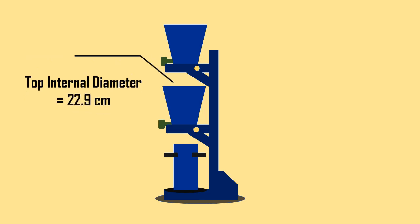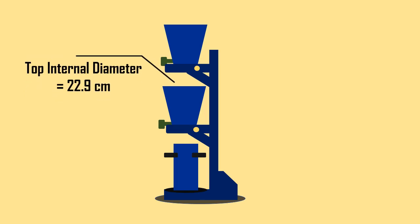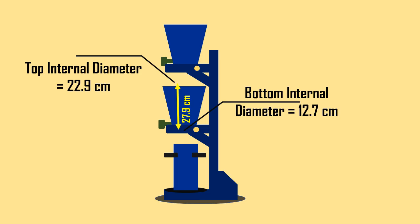A fixed lower hopper of dimensions: top internal diameter 22.9 cm, bottom internal diameter 12.7 cm and internal height 22.9 cm.